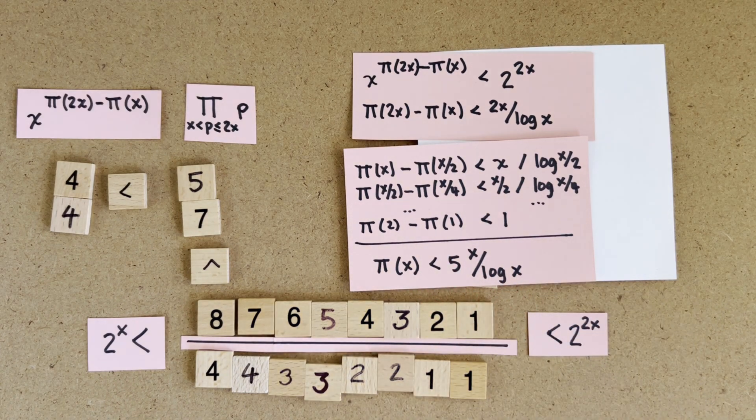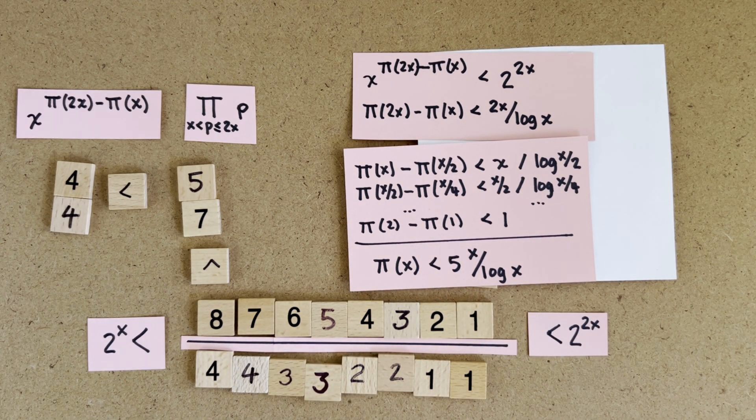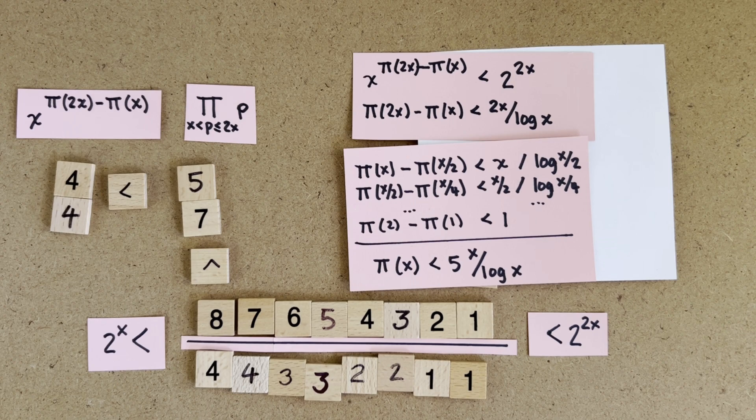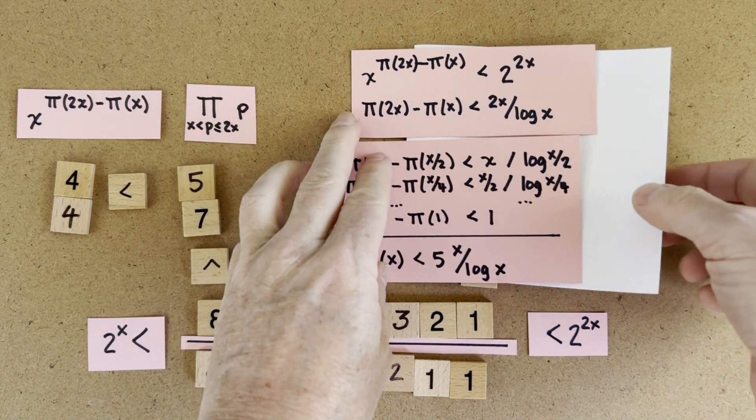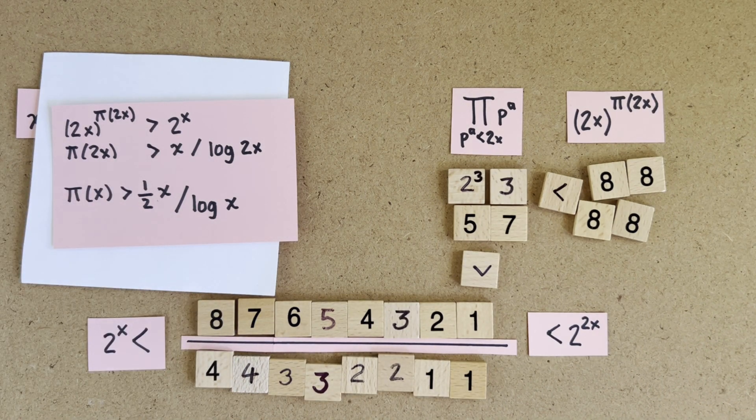And we can cross these out and use general induction to show that the right-hand side never gets bigger than 5x over log x. And we can get the second bound from this part. This is also a general formula, so π(x) is greater than a half of x log x. And done!